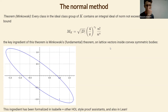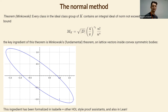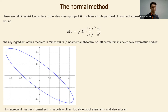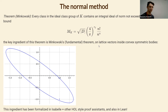The normal way of finding generators for the class group involves Minkowski's theorem, sometimes called the Minkowski bound. It says every ideal class contains an integral ideal of norm not exceeding a certain bound — where d is the discriminant of the number field, r₂ is the number of complex embeddings, and n is the degree. This relies on Minkowski's fundamental theorem, which gives a condition on how large a convex symmetric body must be to contain a nonzero lattice point.